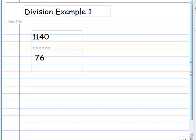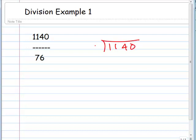Division Example 1: 1140 divided by 76. We're going to do this division problem by first writing in long division form. So 1140 divided by 76.